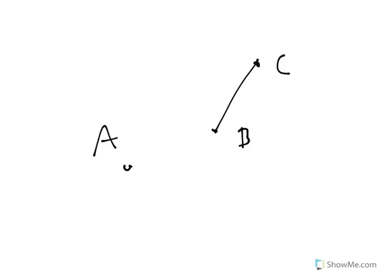The second proposition in Euclid's Elements is to copy a line segment. Here I have line segment BC. I want to make another line segment of the same length that has point A as one of its endpoints. The first step is to use the first construction to make an equilateral triangle.